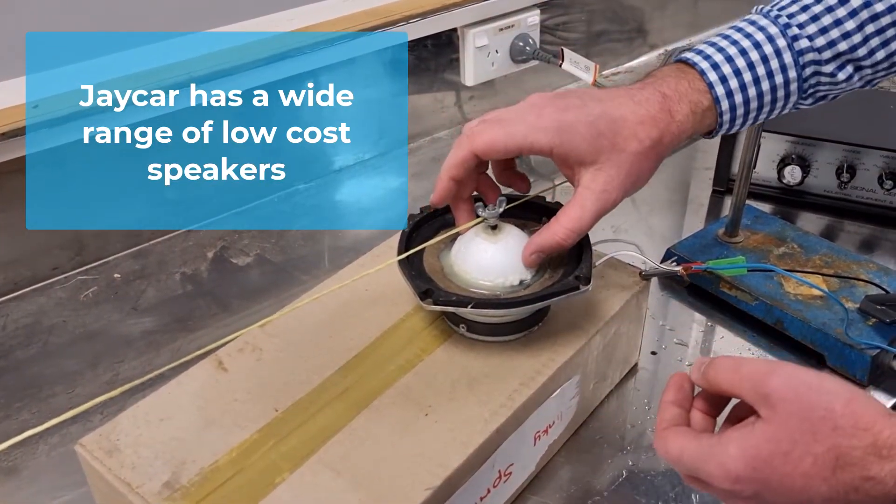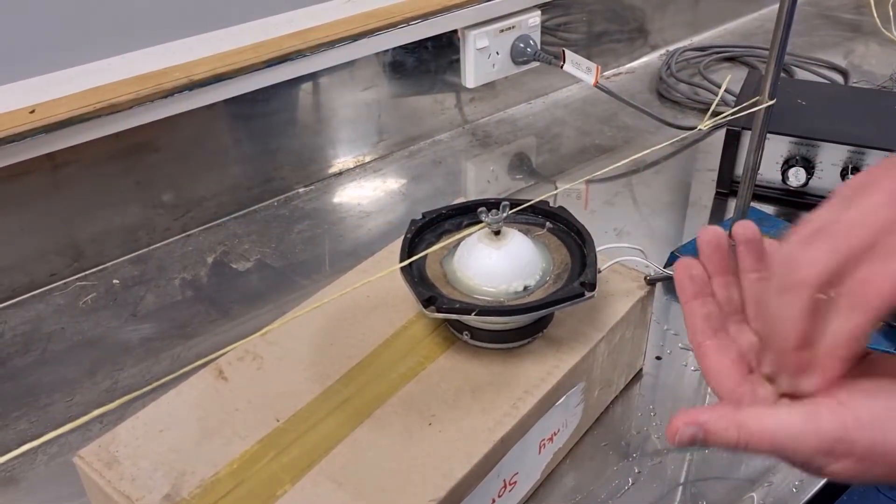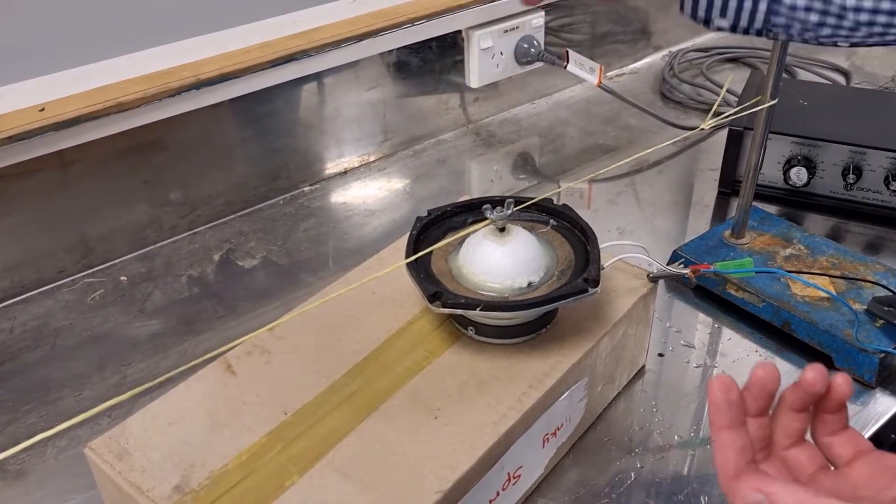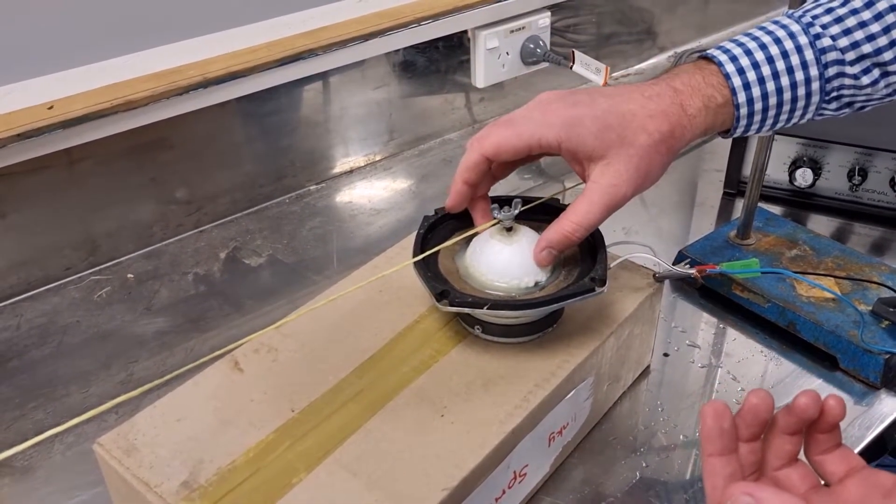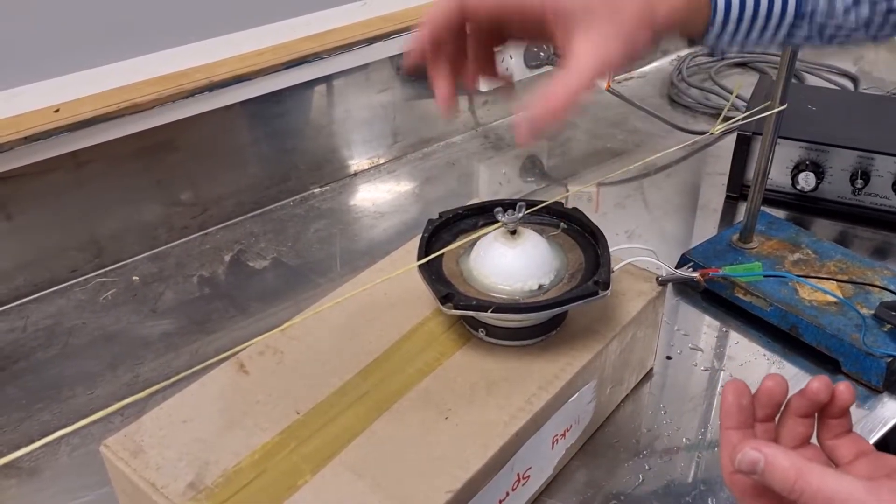I got a styrofoam ball, so that used to be a solid round styrofoam ball, cut it in half with a knife. You can get these from Spotlight in New Zealand or any other arts and crafts store probably around the world. And then I just filled the base with hot glue and then just dropped her in.